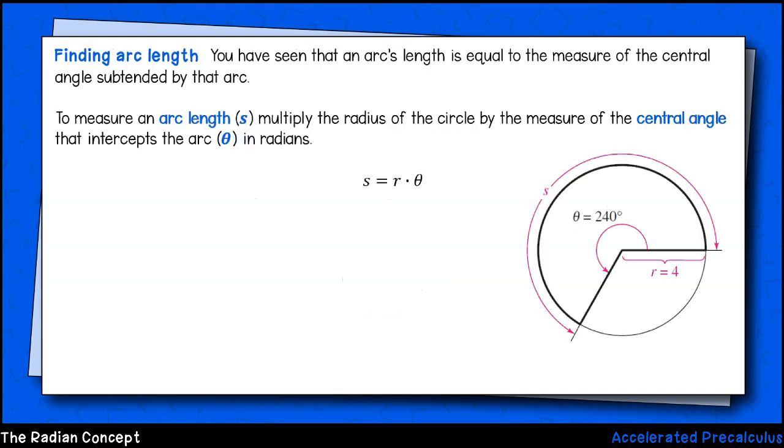One last topic to review. To find an arc's length, simply multiply the radian measure of that central angle by the length of the radius. For example, the central angle shown here is 240 degrees, which is 4π over 3 radians, or 4 thirds π radians. We can scale this up by a factor of 4 to get the length of the arc labeled s. Why 4? Because the radius of the circle is 4.